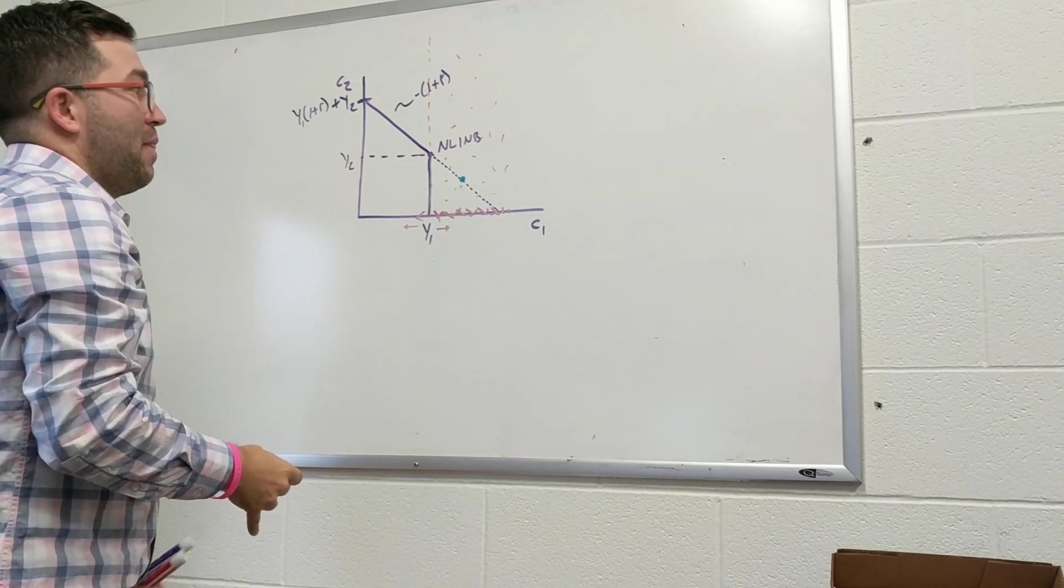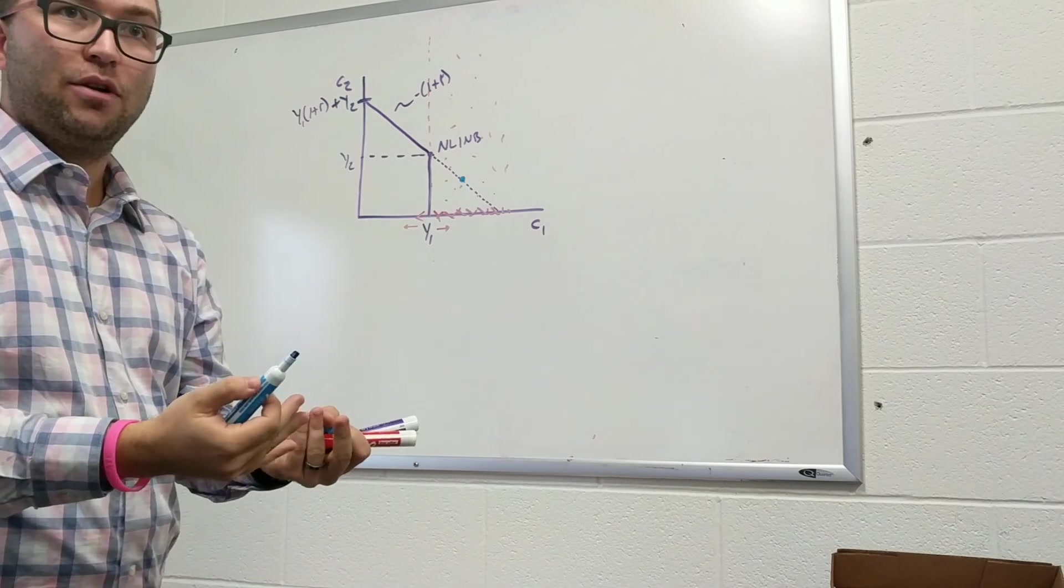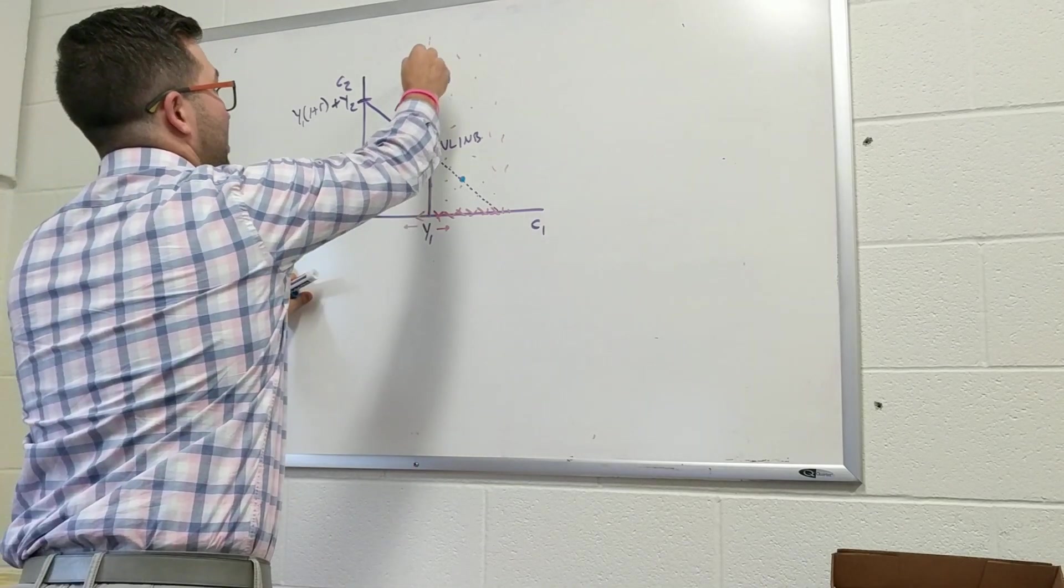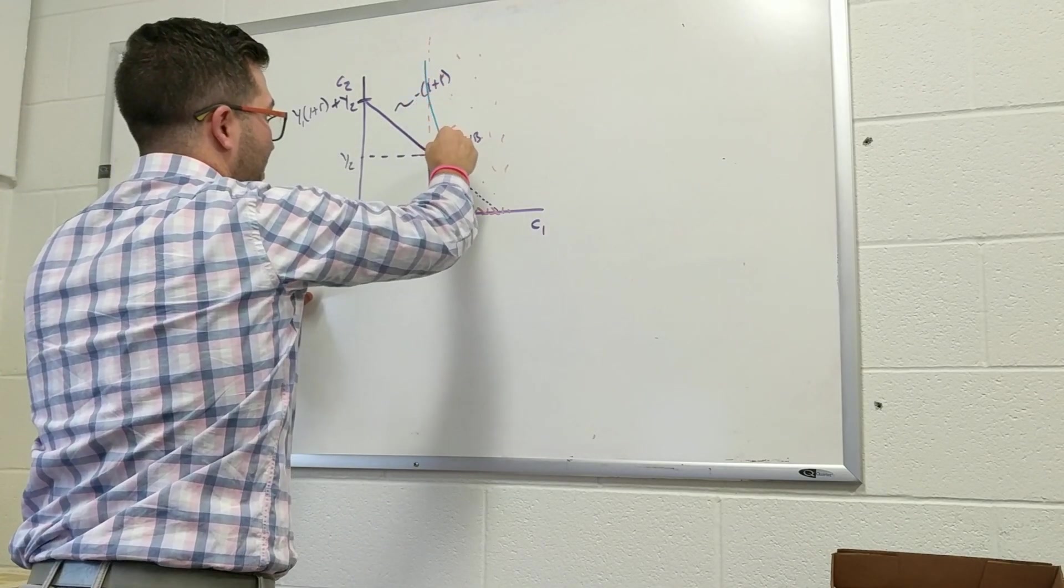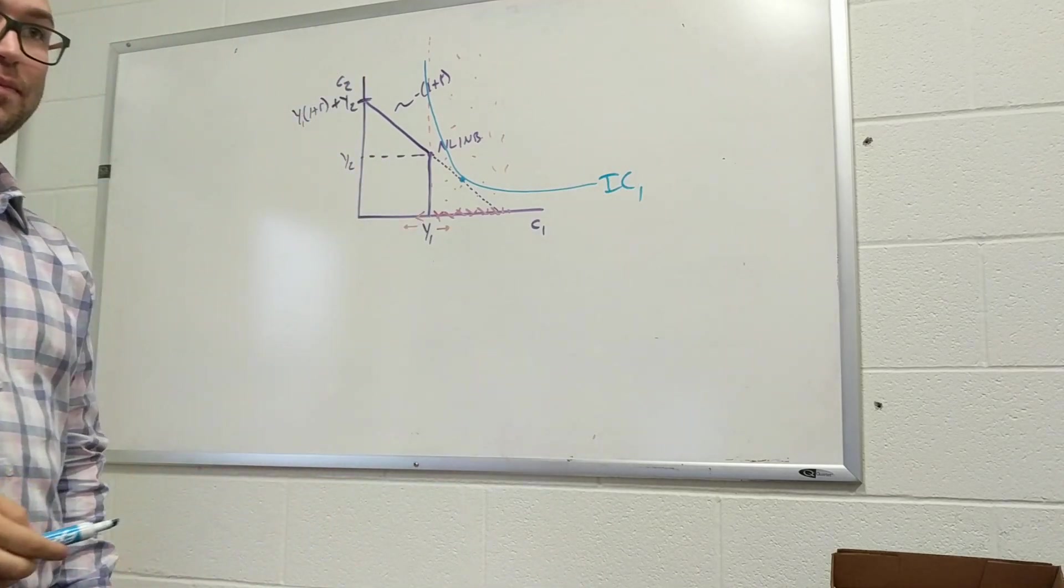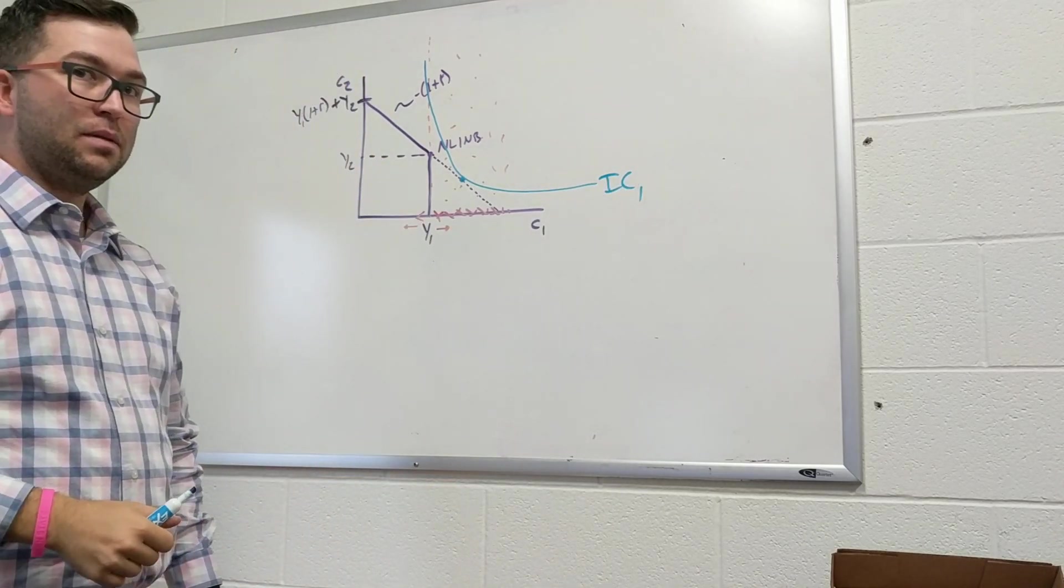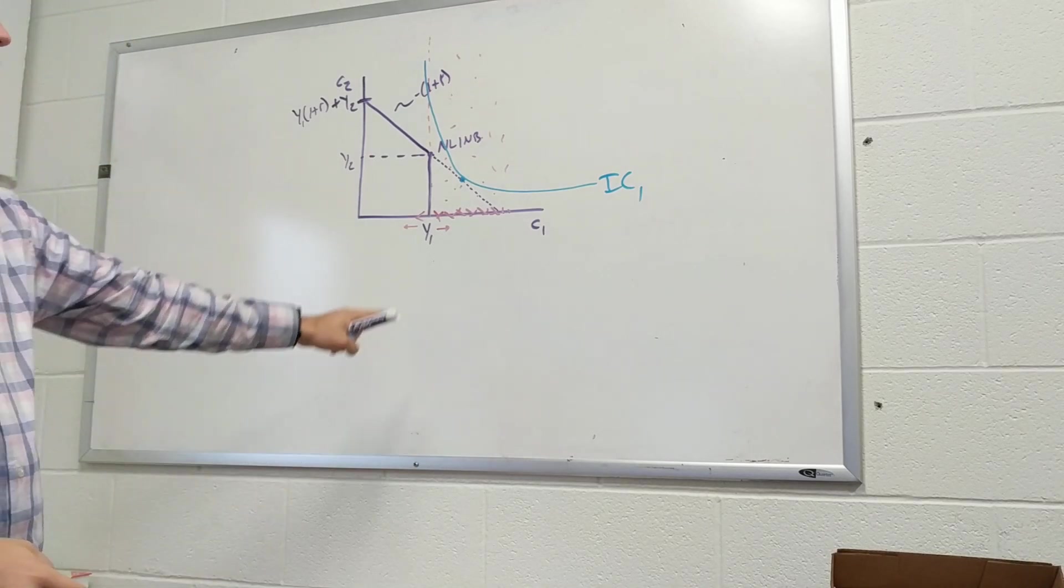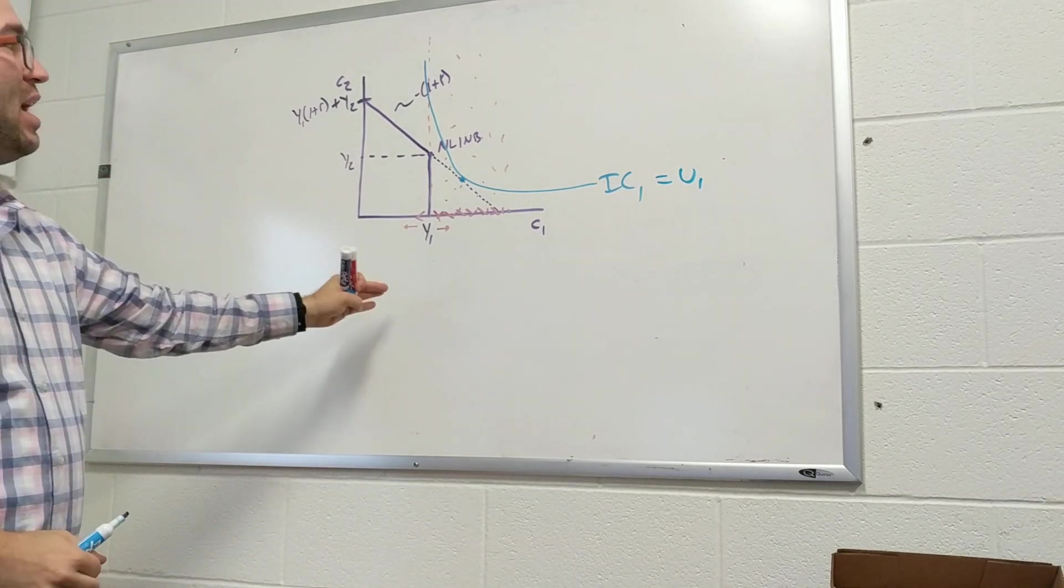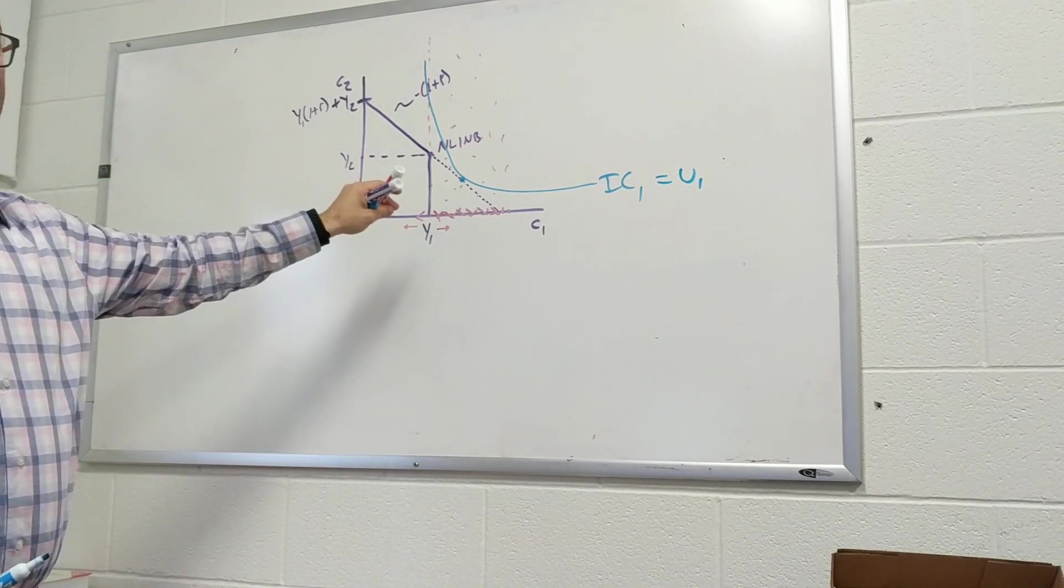So I know that the optimal consumption bundle is where your indifference curve is tangent to that point. So I'll say, okay, let's just go ahead and make a nice indifference curve that looks like that. This indifference curve has some sort of utility. If Ray is budget constrained, can he reach that point? He cannot.